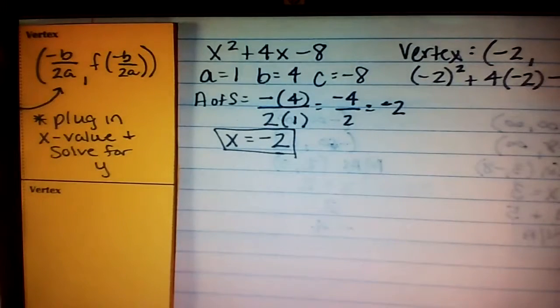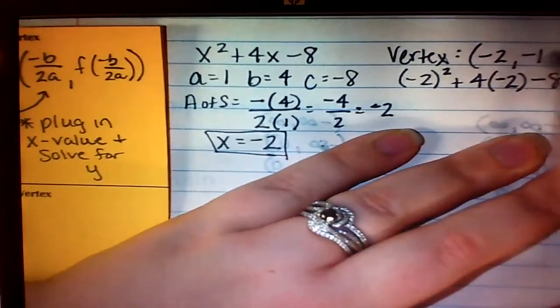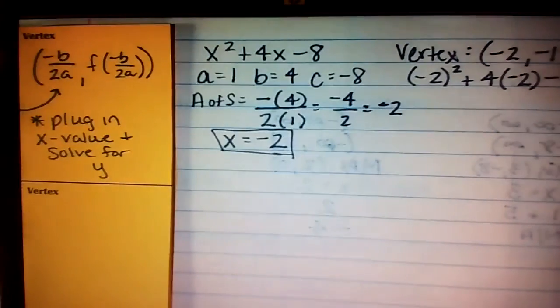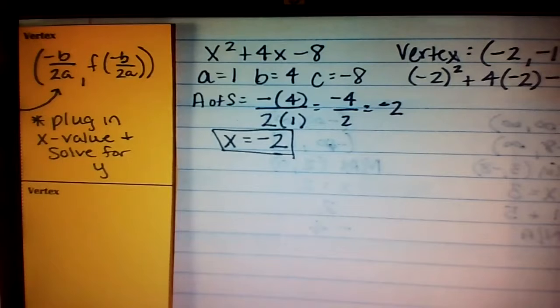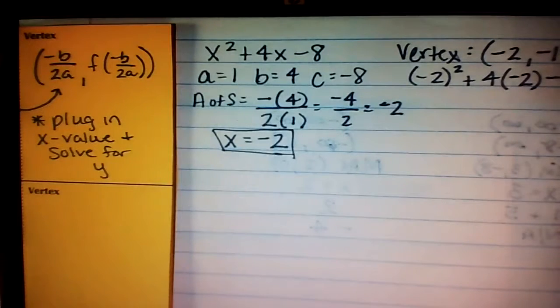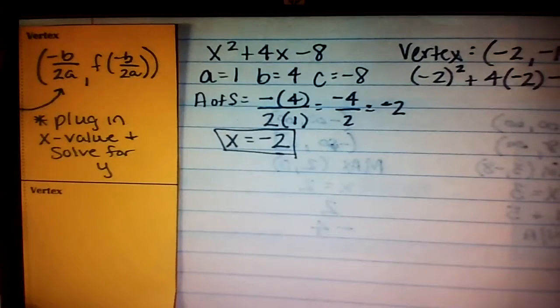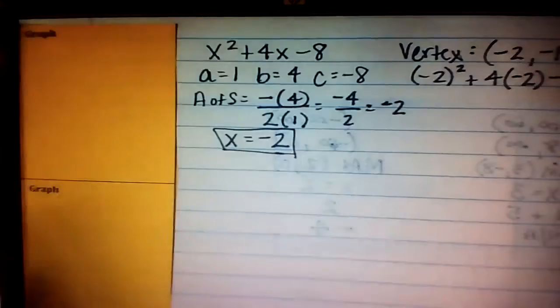So when we plug this in, what's negative 2 squared? 4. 4 plus 4 times negative 2 is negative 8. So we've got 4 minus 8, which is negative 4, minus another 8. This comes out to be negative 12. So that means your vertex is at negative 2, comma, negative 12.